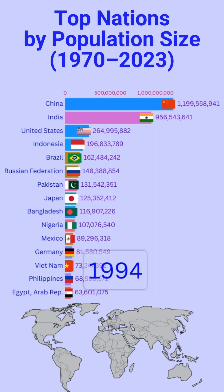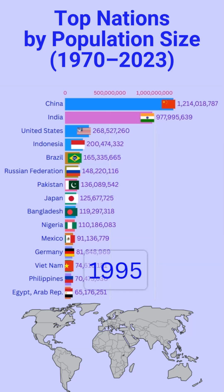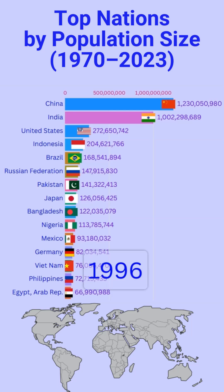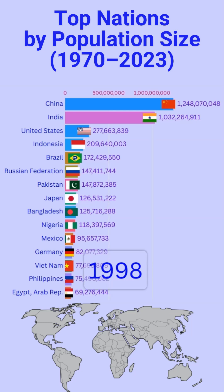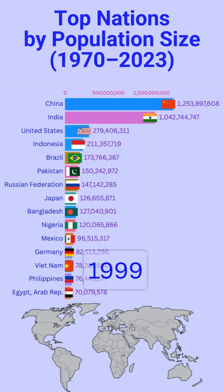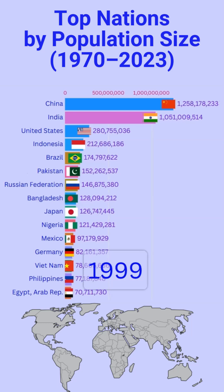In contrast, nations like Russia and Germany face declining populations due to aging demographics and low birth rates. Meanwhile, the U.S. maintains steady growth, primarily driven by immigration.